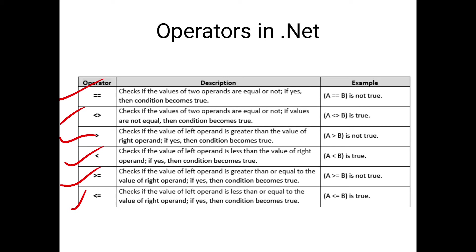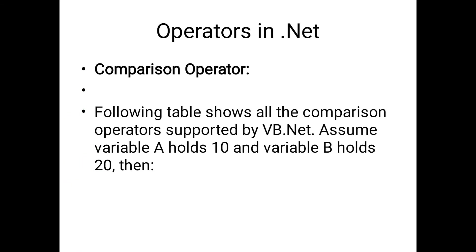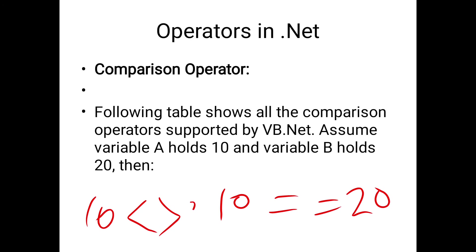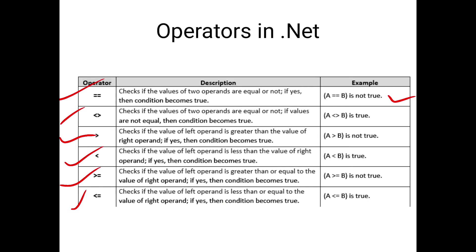The first comparison operator checks if the values of two operands are equal or not. If the condition is equal, it becomes true; otherwise the condition becomes false. Here A == B, but the value of A is 10 and value of B is 20, so the condition becomes false. The second one checks if the values are not equal. Here 10 is not equal to 20, which is true, so the condition becomes true.